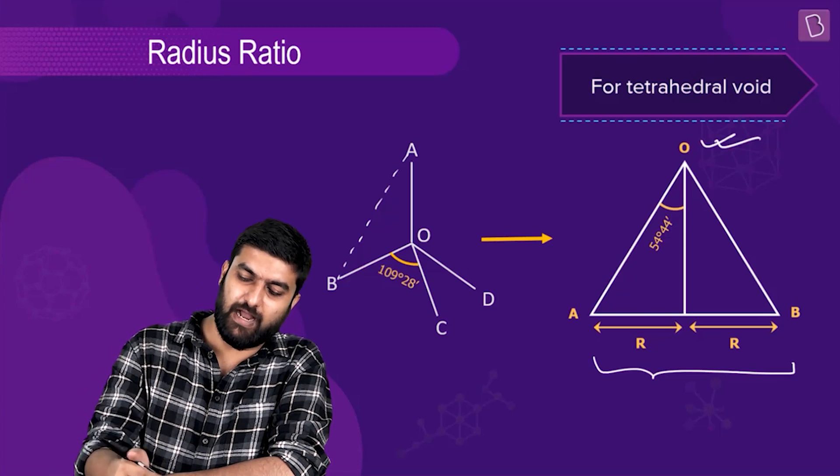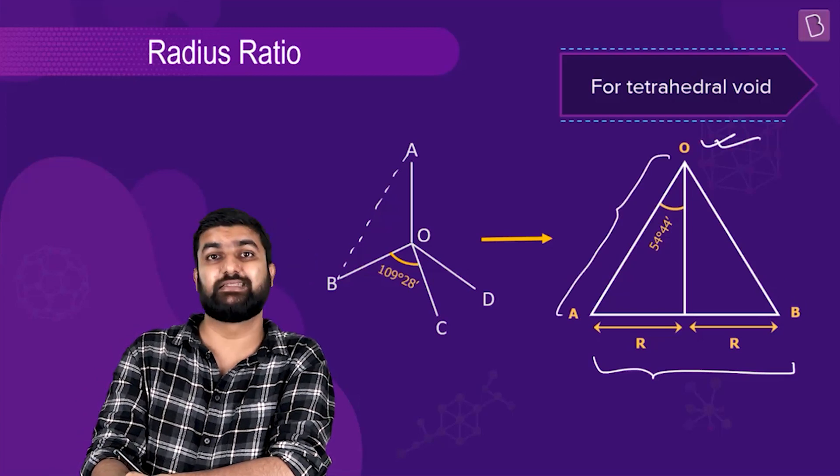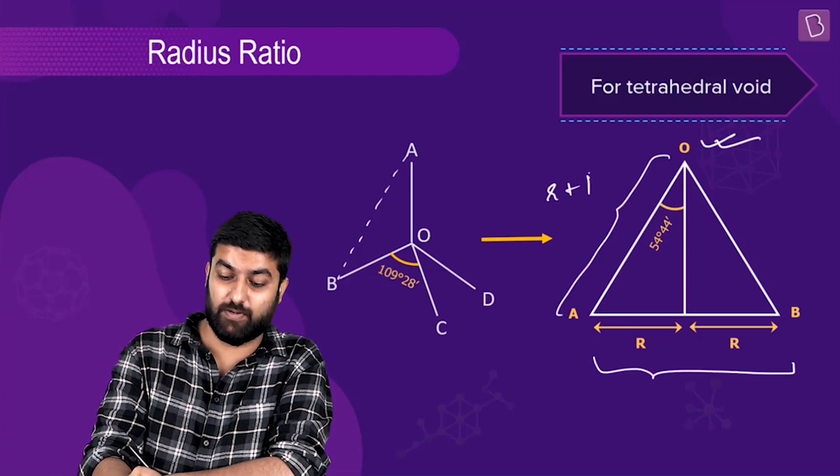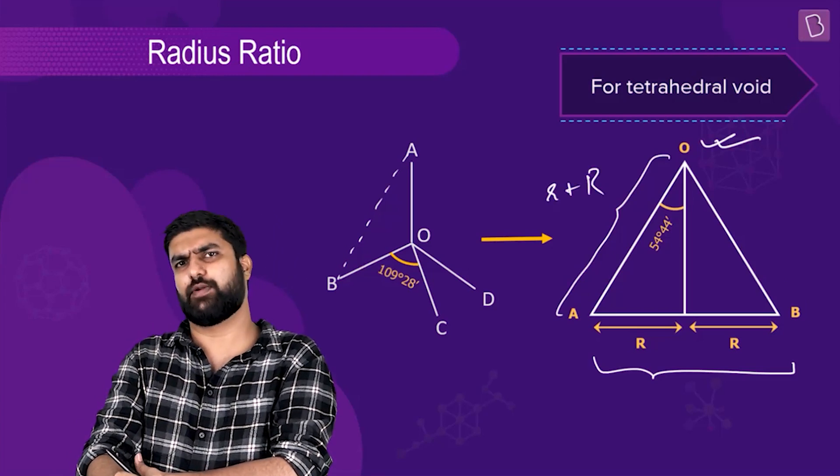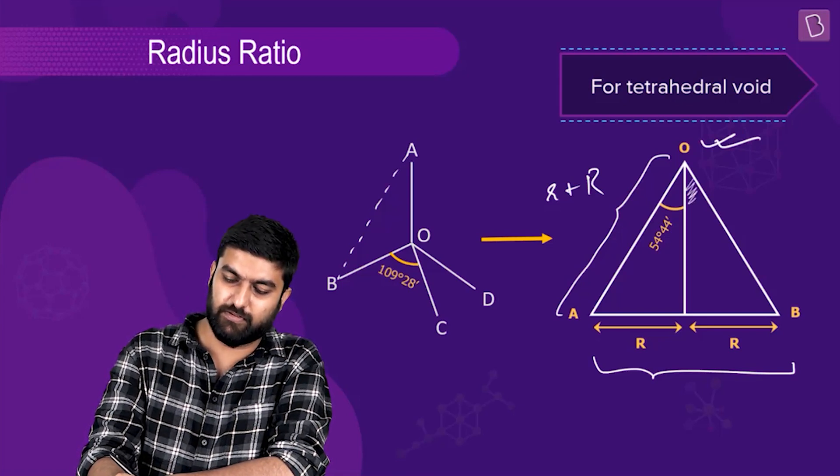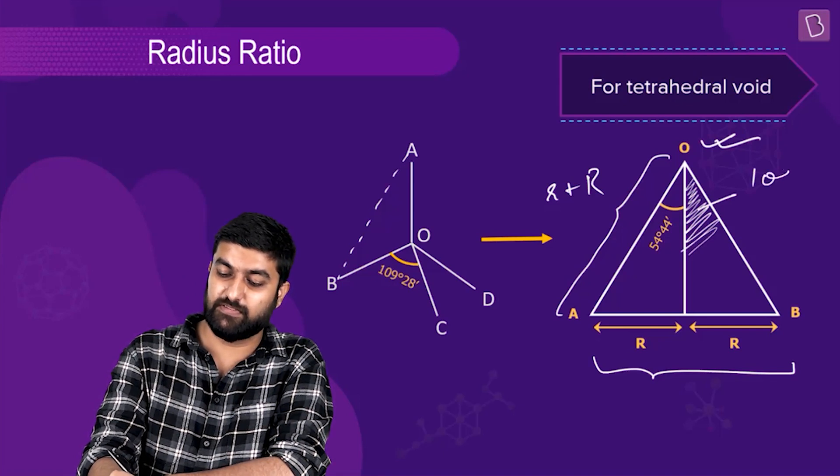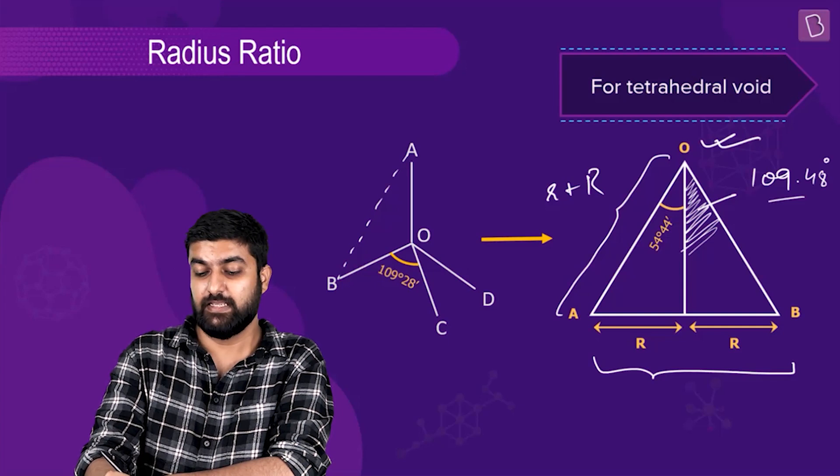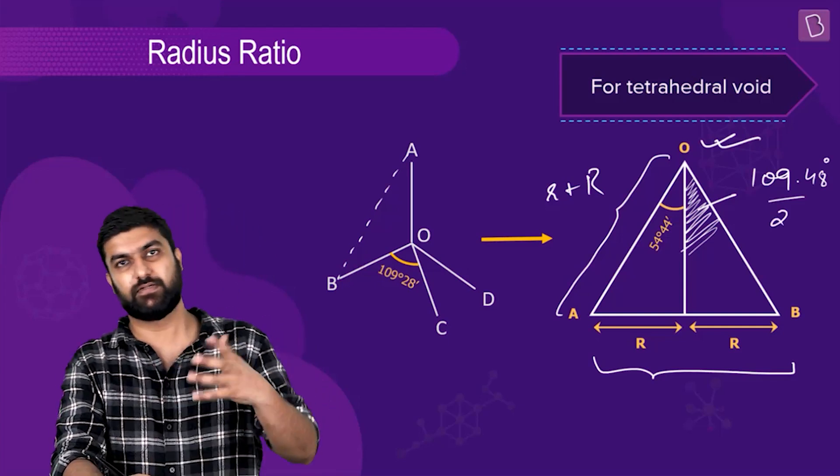They turn out to be approximately 109.48 degrees divided by 2, which is approximately 54.6 or 54.4 degrees. Obviously, I don't want you to remember the value of sine of 54 degrees 44 minutes.